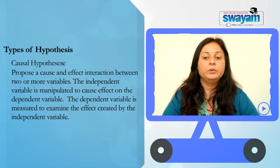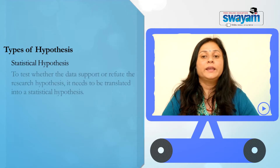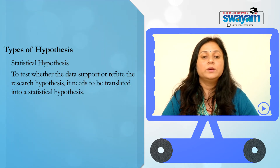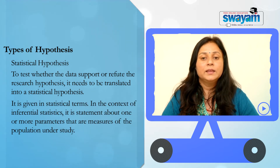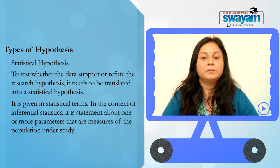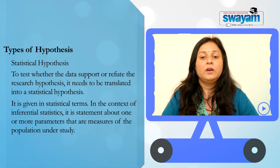Whereas the causal hypothesis proposes a cause and effect interaction between two or more variables. The independent variable is manipulated to cause effect on the dependent variable. Then there is the statistical hypothesis. To test whether the data support or refute the research hypothesis, it needs to be translated into a statistical hypothesis, given in statistical terms. In the context of inferential statistics, it is a statement about one or more parameters that are measures of the population under study.